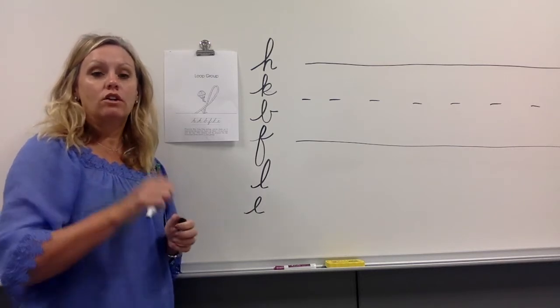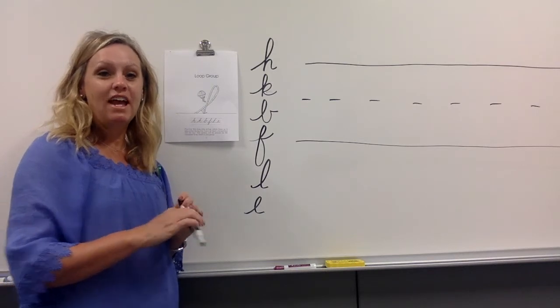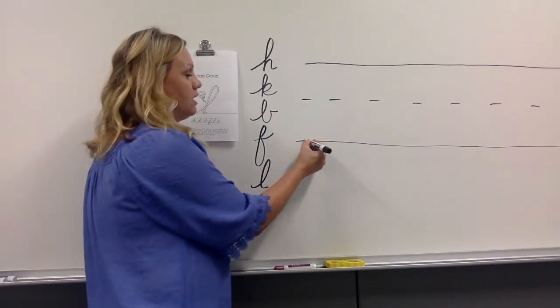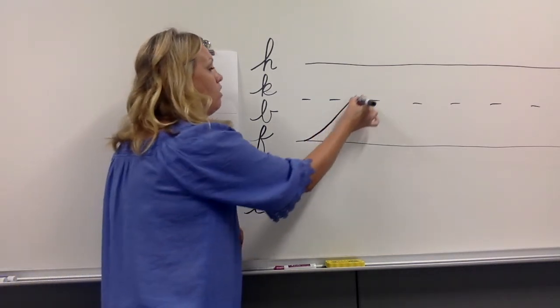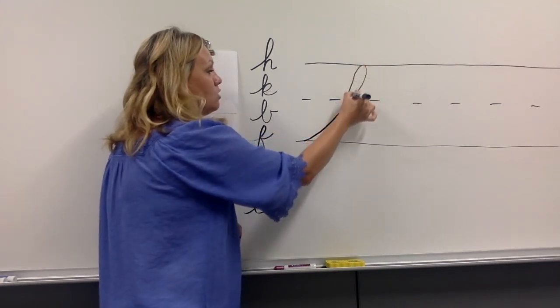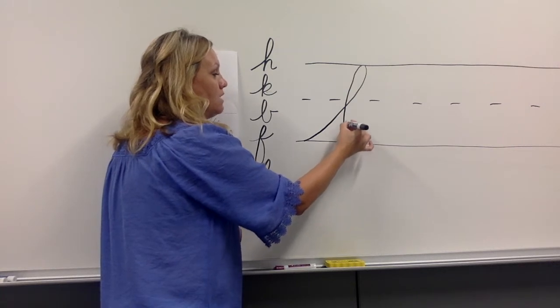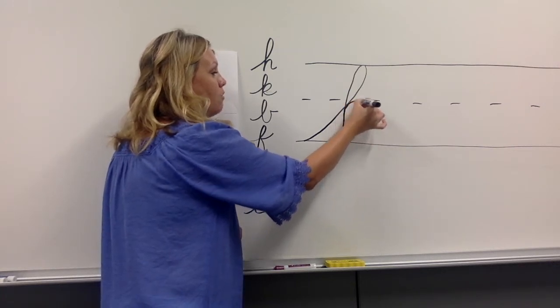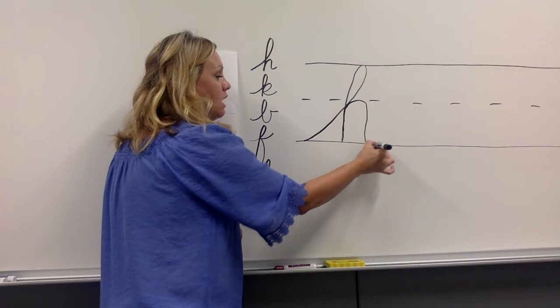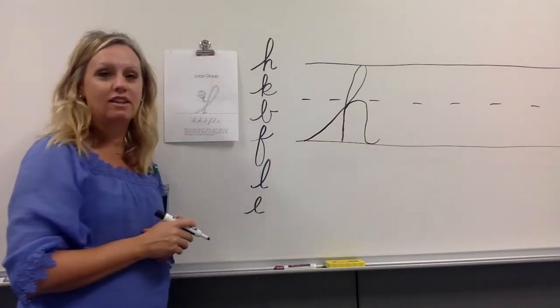So we're going to start our cursive letters where? At the bottom writing line. We're going to kite string up all the way to the top this time. Backwards loop, pull straight down, retrace up halfway, make a hill, and release. There's your H.